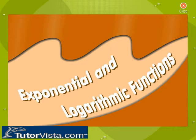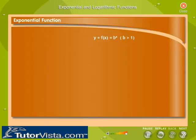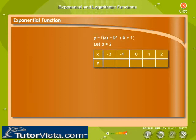Exponential and logarithmic functions. A general exponential function is of the form y equals f(x) equals b to the power of x, with a positive base b greater than 1. Let us take a particular value for b as 2. To draw the graph of the function, we first make a table of values. We take values of x between minus 2 and 2 and find the corresponding values of y.